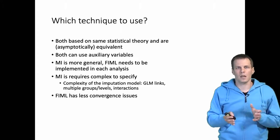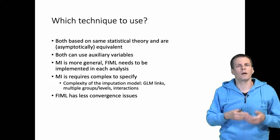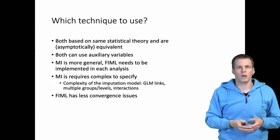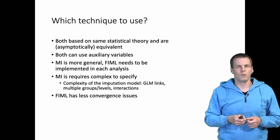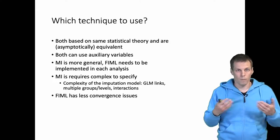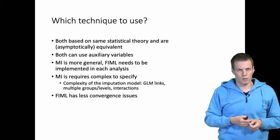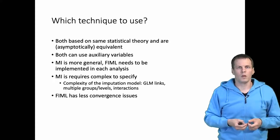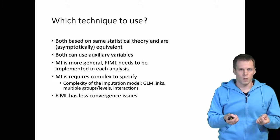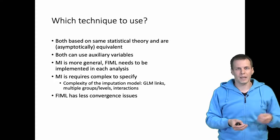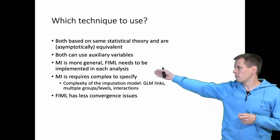Both can use auxiliary variables — variables that help in the imputation but are not part of the actual model. Doing so may be a bit easier using multiple imputation than using full information maximum likelihood, which speaks in favor of multiple imputation. On the other hand, multiple imputation is more general, because full information maximum likelihood is an estimator that needs to be implemented in your statistical software for the particular model you want to run. In contrast, multiple imputation can be applied with any analysis that uses raw data, making it more general than FIML.